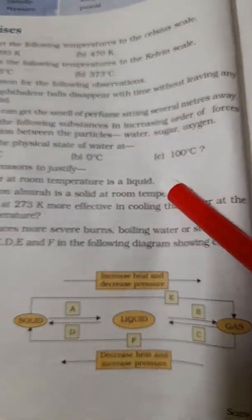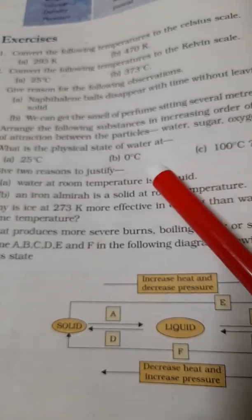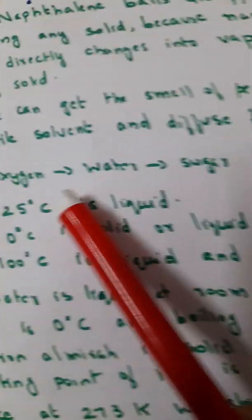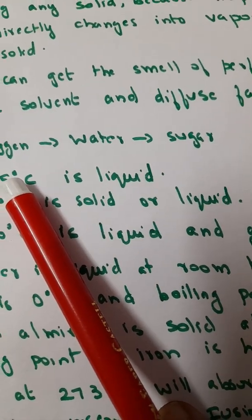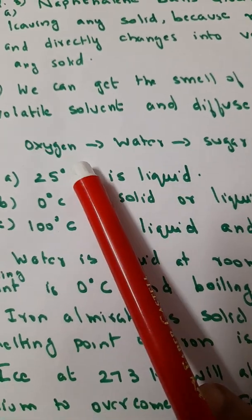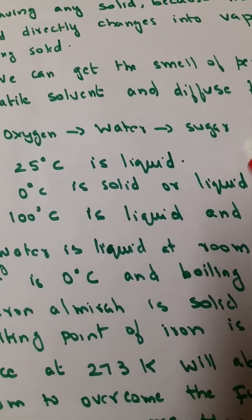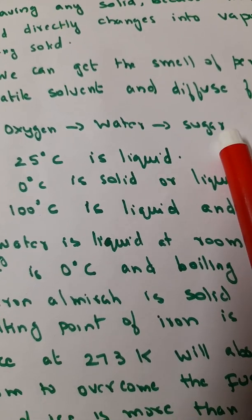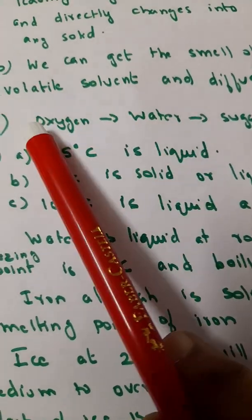Now next, fourth question is arrange the following substances in increasing order of forces of attraction between particles: water, sugar, oxygen. You have to arrange them in increasing order of forces of attraction between the particles. So you know naturally gas, oxygen is a gas, so that will have minimum. Which order are they asking? Order of forces of attraction. This is least for oxygen, then comes water that is liquid, sugar highest because it's in solid state. So the order is oxygen, water, sugar. Maximum will be in sugar because it is in solid state. Because molecular force of attraction is strongest in solid state and it is least in gases.